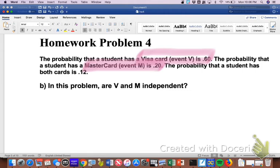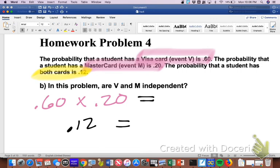So that's going to be 0.60 times 0.20. And if that number ends up being the given probability of both of them happening in the problem, that means that they are independent to each other. Well, 0.60 times 0.20 is in fact 0.12. So because those two numbers are equal to each other, that means that these are independent.